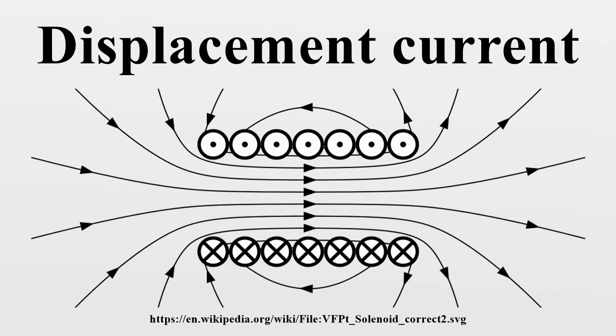This causes an increase in the state of polarization P. A changing state of polarization corresponds to charge movement and so is equivalent to a current. This polarization is the displacement current as it was originally conceived by Maxwell.